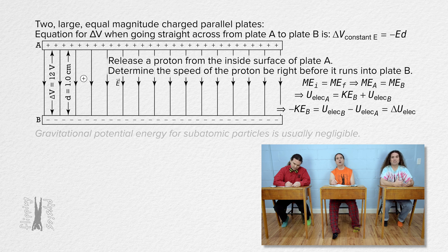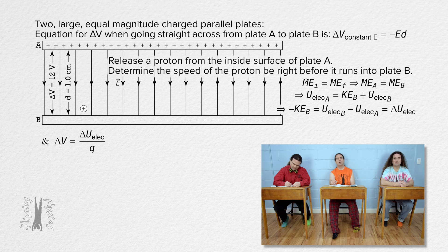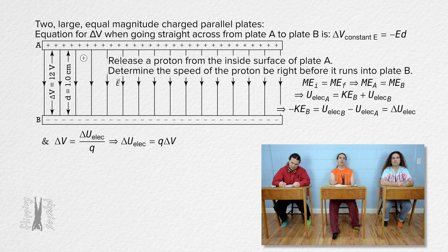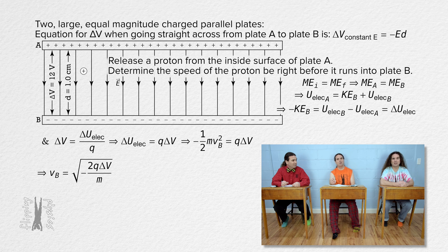We know electric potential difference equals change in electric potential energy over charge. That means change in electric potential energy equals charge times electric potential difference. Now we have negative one-half times mass times speed at B squared equals charge times electric potential difference. We can solve that equation for the speed of the proton at plate B, but we cannot take the square root of a negative number.